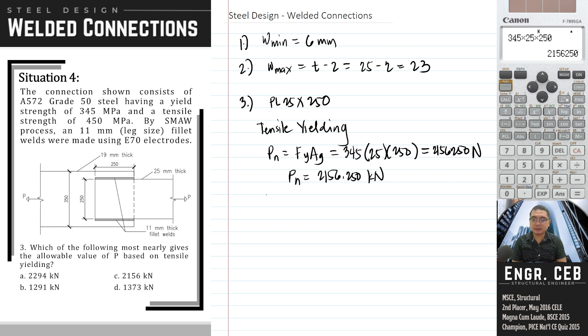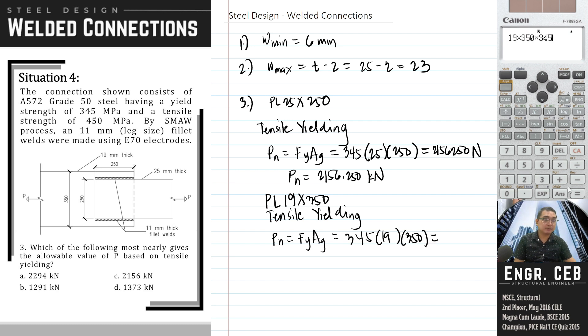Next, let's base it on the other member, PL 19 by 350. We have Pn equals Fy times Ag equals 345 times 19 by 350, which gives 2294.25 kN. The 25 by 250 plate is lower.